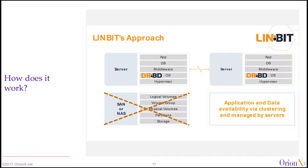Linbit HA is high availability — that's our core competency, what we've been doing since 2001. The disaster recovery aspect came around 2008. We had a customer — I believe it was the National Weather Society in Europe — that wanted to transfer large chunks of data across their ISDN line, but this impeded application performance because ISDN is super slow. So we came up with Linbit DR, which is able to buffer the writes without impacting performance locally and then transfer them over the wire as bandwidth is available.